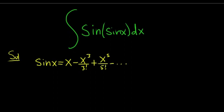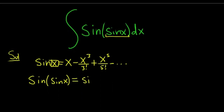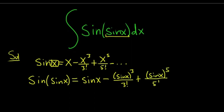Now what we'll do is replace x with sine x to get sine of the sine of x. So we're replacing x with sine x, giving us: sine x, minus sine x cubed over 3 factorial, plus sine x to the 5 over 5 factorial, minus dot dot dot.